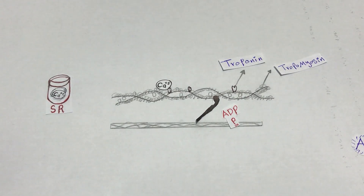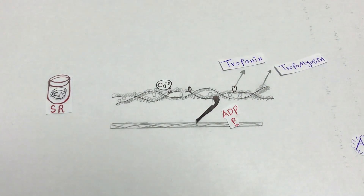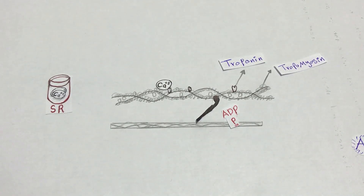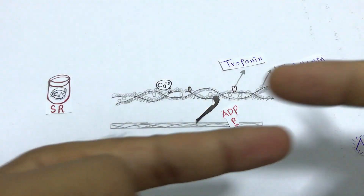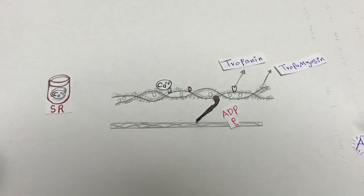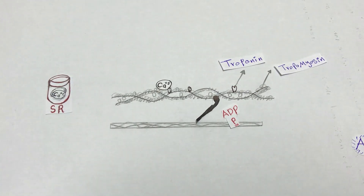Calcium ions are stored in the sarcoplasmic reticulum and are released in response to signals from the nervous system to contract. The calcium stores are opened once they receive the signal from the nervous system, which travels along the T-tubule. When myosin and actin slide on each other — or overlap — the entire sarcomere shortens. As it contracts, the entire muscle fiber shortens, and when muscle fibers contract they can produce enough force to move the body.